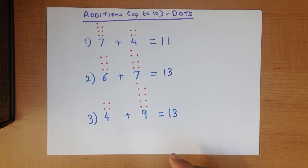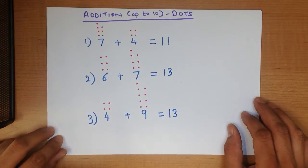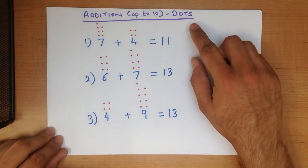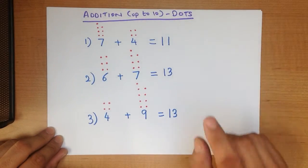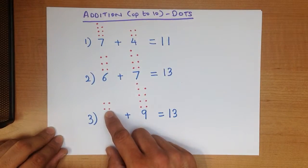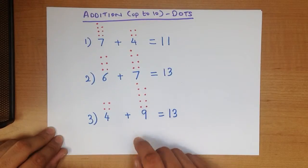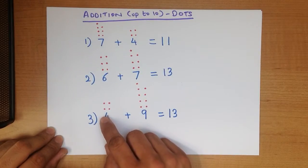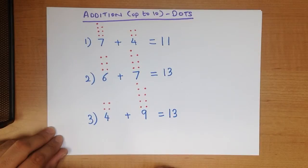So whenever you are adding numbers up to 10, and you want to use the dots method, always remember: with the number, put in the dots at the top for each of the numbers, and then you simply count how many dots there are.